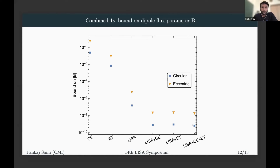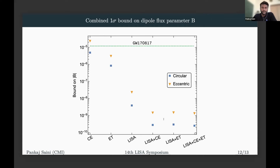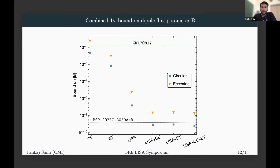Adding a further detector does not improve the bounds much. Now if we use an eccentric waveform for these eccentric sources, the bounds become a little weaker in all the detectors. This is expected because we're adding an extra parameter to the waveform, so information is distributed among different parameters and because of correlations of eccentricity with other parameters. Comparing with the currently best measured bounds from GW170817 — on the order of 10⁻⁵ — the combined multi-band bounds are four orders of magnitude better. Comparing with pulsar bounds, the circular waveform does a little better, but the eccentric ones are slightly weaker than pulsar bounds, which are very effective because of 15 years of observation.